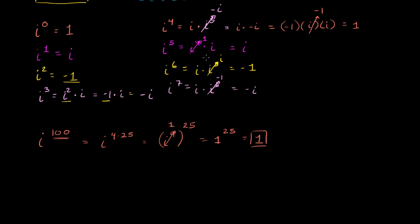1 to the 25th power is just equal to 1. So we used the cycling ability of i when taking its powers to figure out a very high exponent of i. Now let's try something a little bit stranger: i to the 501st power. In this situation, 501 is not a multiple of 4, so you can't do it quite that simply.